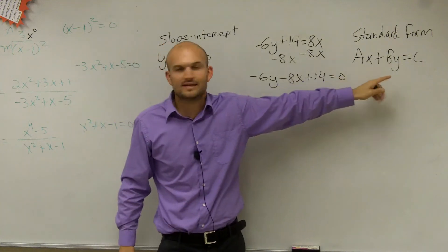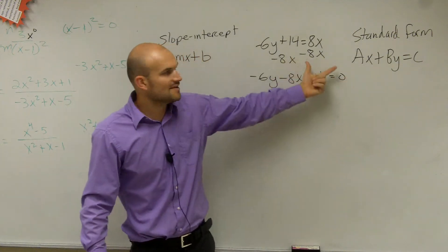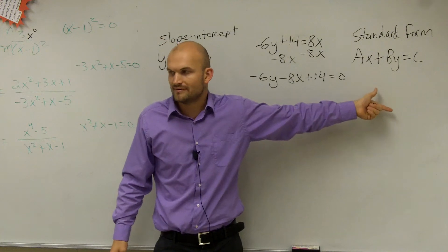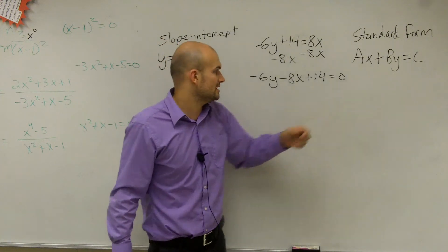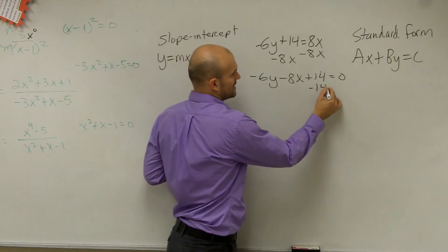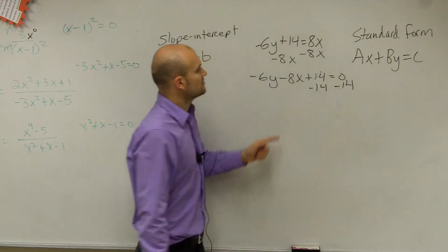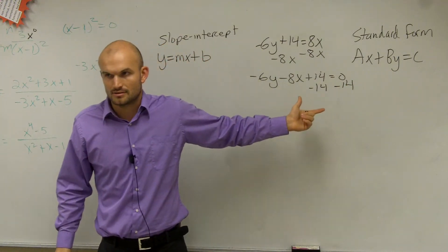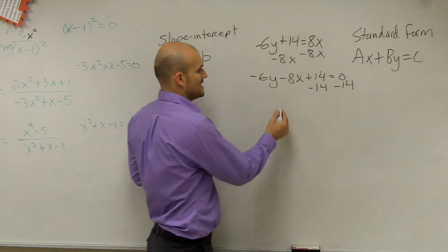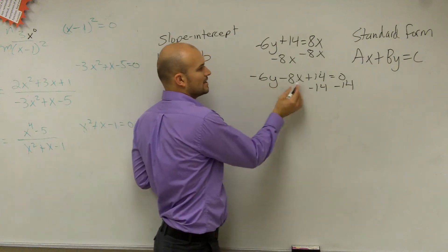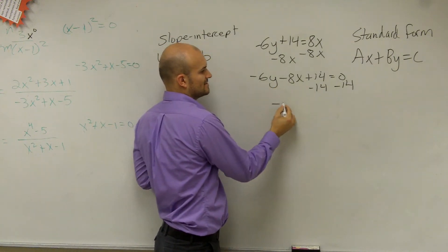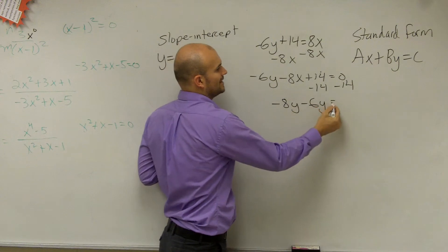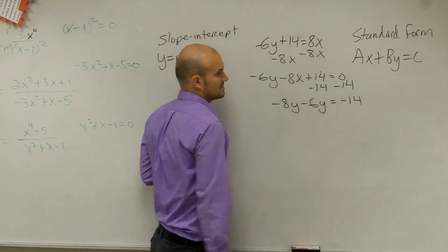We need to get c on the right side — on this left side we only have ax and by. Then we have to make that equal c. So I'm going to subtract the 14 on both sides. Now, do we write the y or the x first? x. Please make sure you stay with that. So I can rewrite this as negative 8x minus 6y equals negative 14.